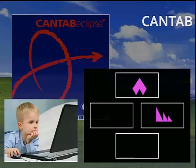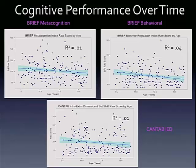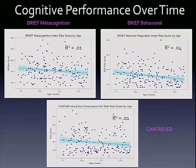Here we're looking at cognitive performance on these measures over time — the BRIEF metacognition, the BRIEF behavioral, and the CANTAB — and they're all pretty much showing you the same message. The slightly negative correlation is representative of better performance on these measures. As you can see, there's a lot of variance, which means something else besides age is accounting for these scores — perhaps this could be explained by areas of brain development.